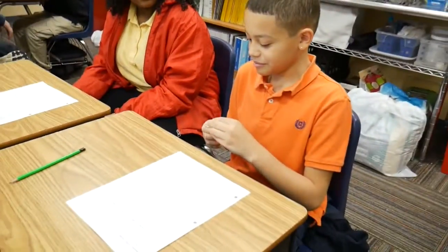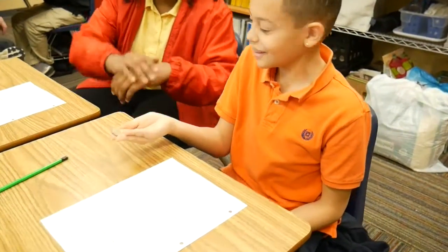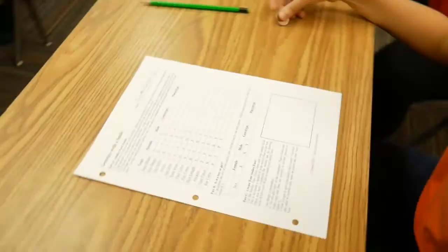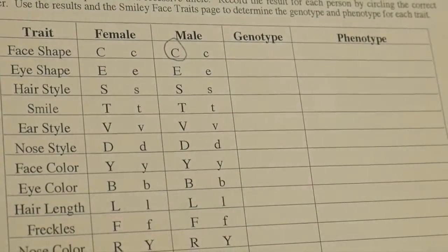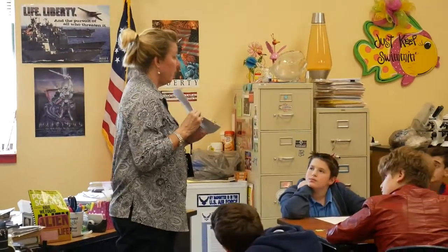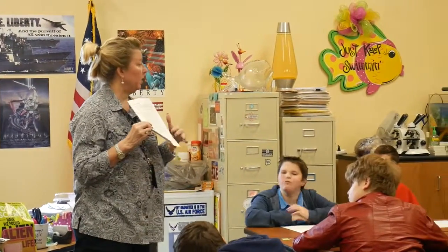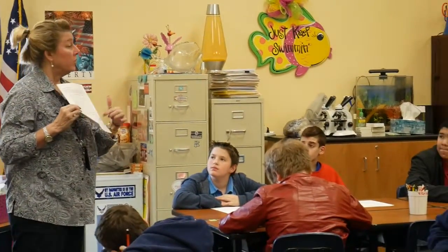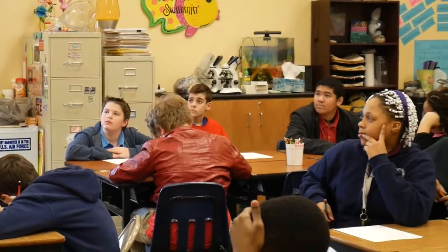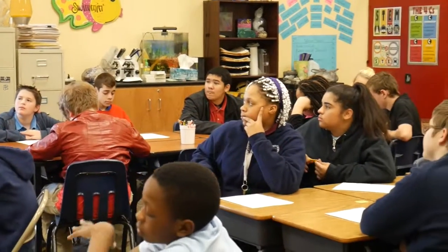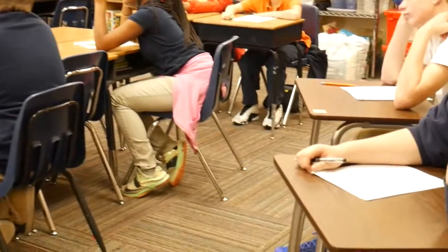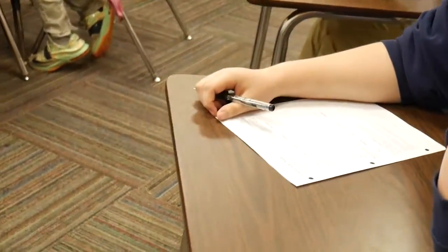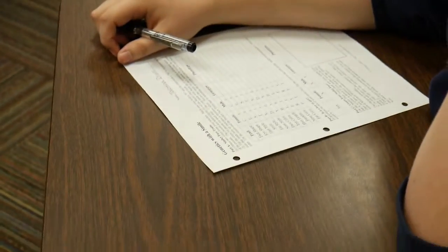First trait. And then everybody's going to draw their offspring. When you get done, it's just going to be all the facial features. Everybody has to draw in color their offspring right here. After you're done flipping, you're going to do this — the traits are on the back, go take a look at it.